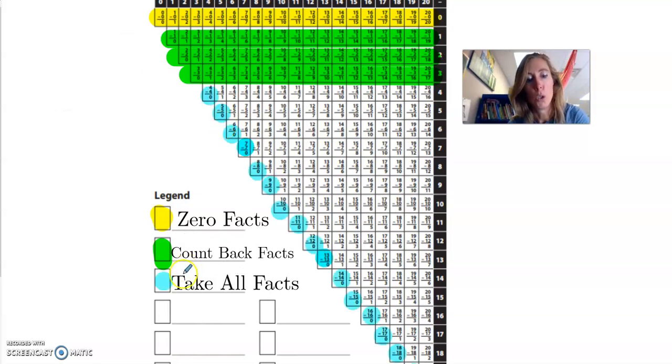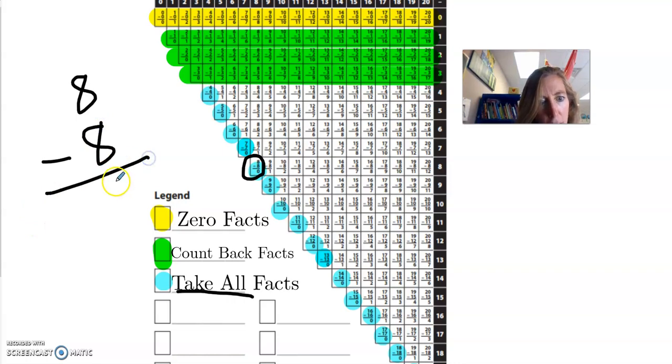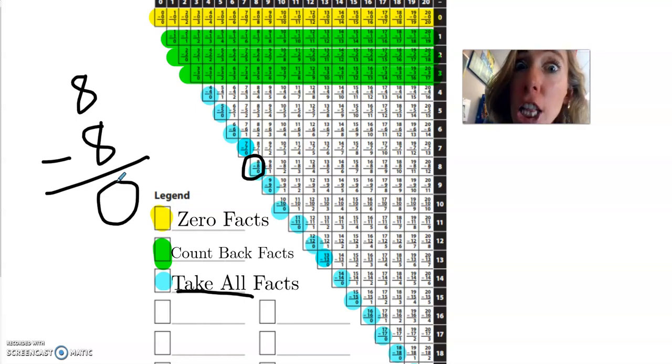Let's go to another set. Check out the blue. These are called take all. Why are they called take all? Because, if I have eight toys and I give eight of them away, how many am I going to have left? None. You gave them all away. Like all of them. You're taking all of them away. So you have nothing. Such a great person that you gave all your toys away. So we're always just left with zero because we took everything away. So those are great facts too. So look at that. Zero, count back and take all. Wow, that's a lot of facts already off the table.